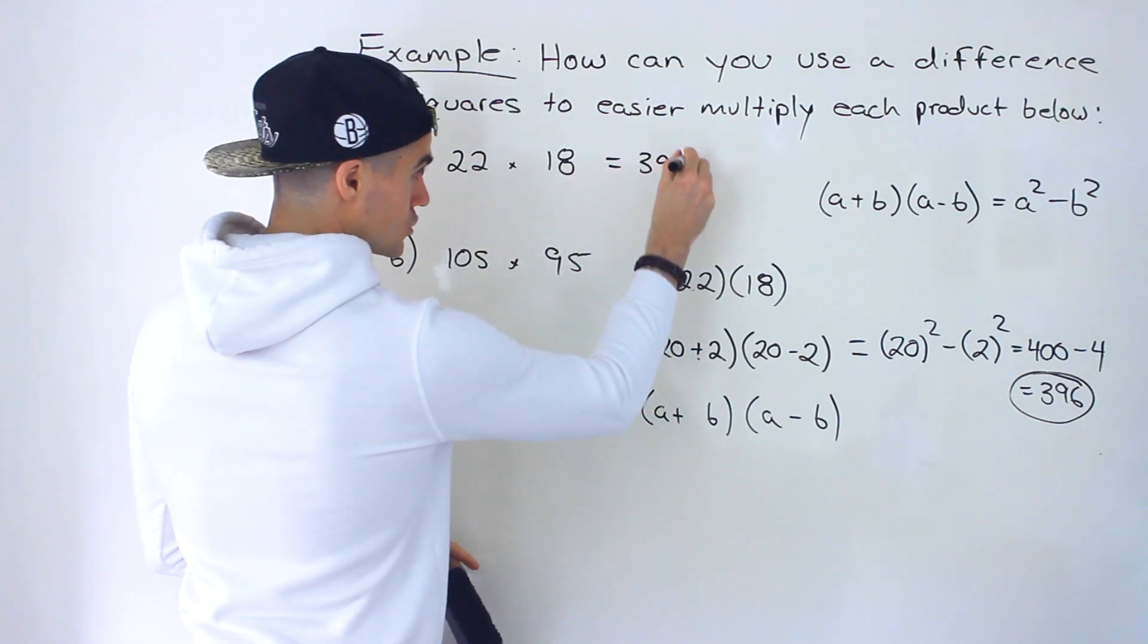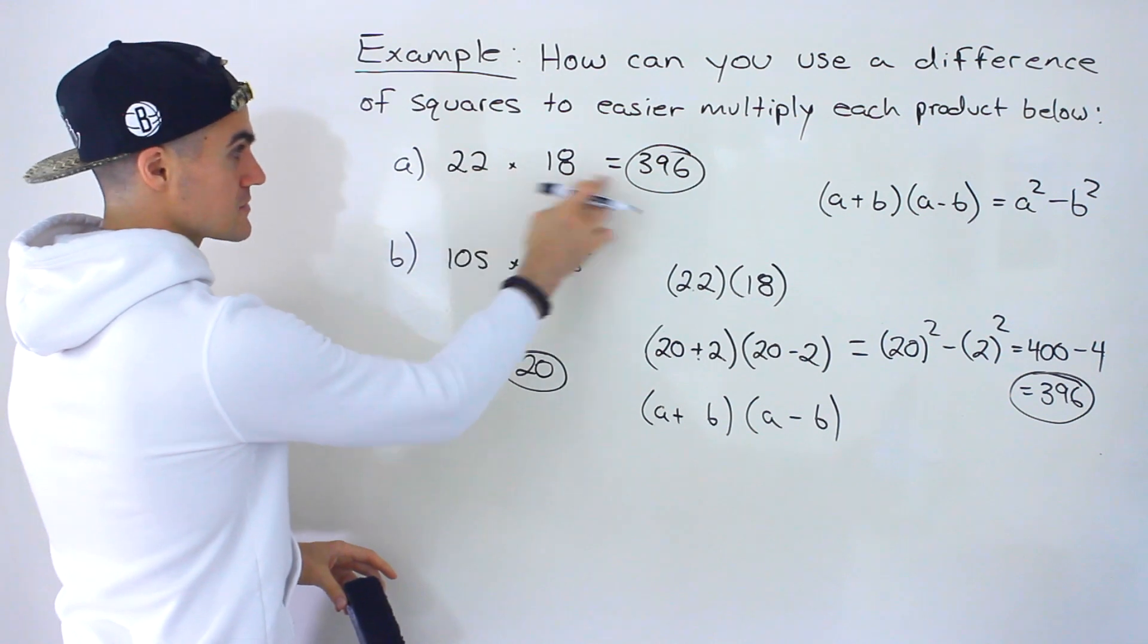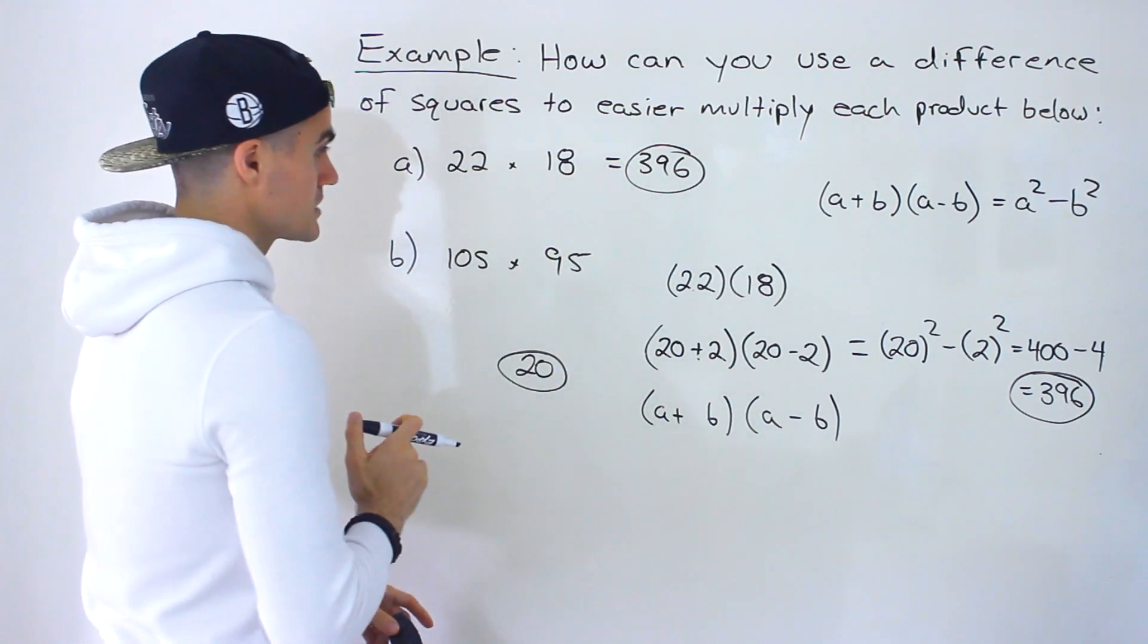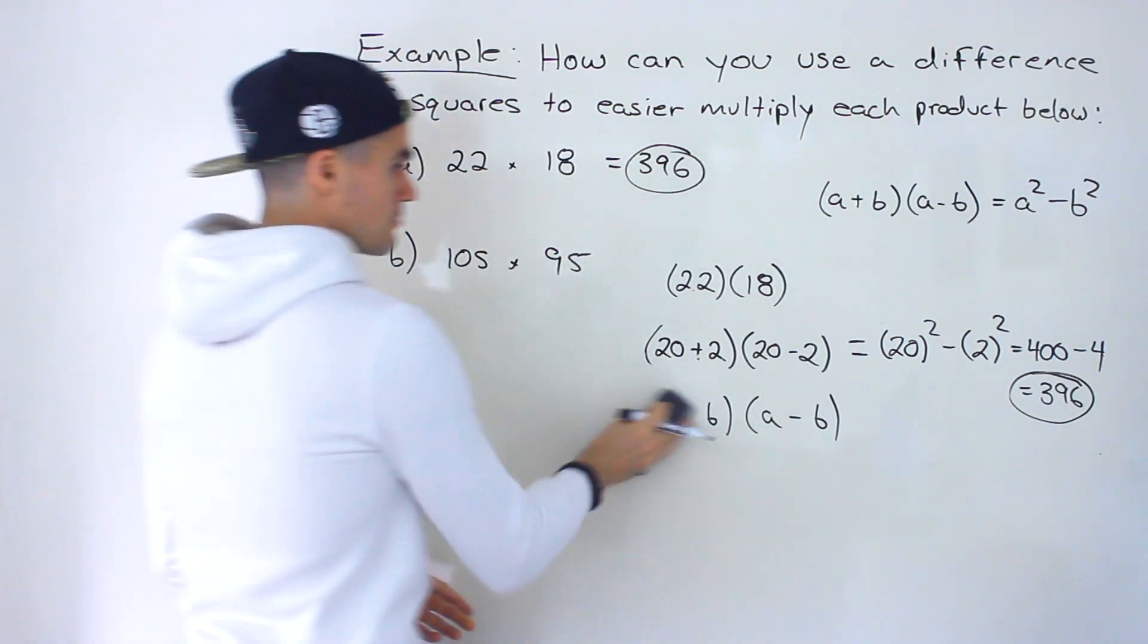And then if you have a calculator you could check this as well. This times that would give you the 396. And it's just the same process every time.